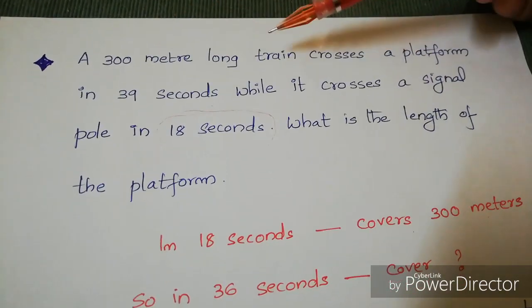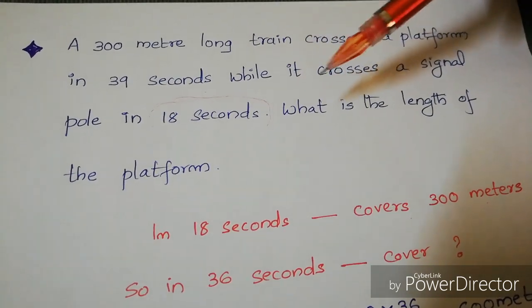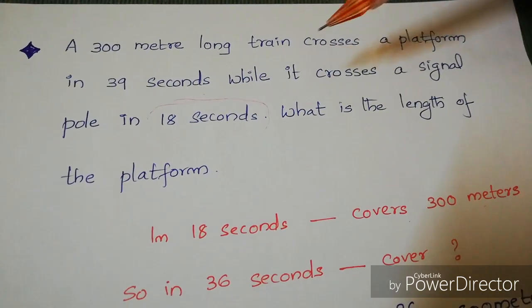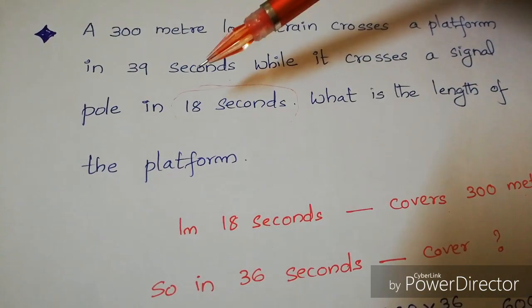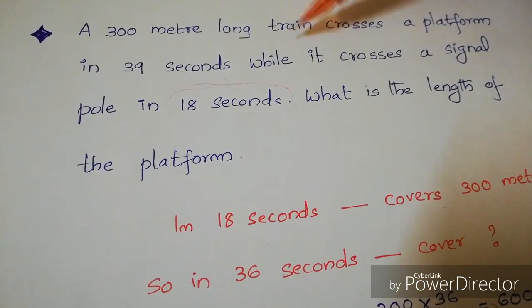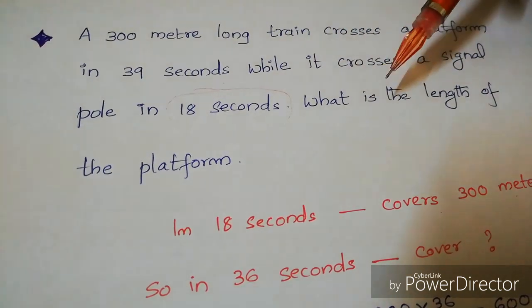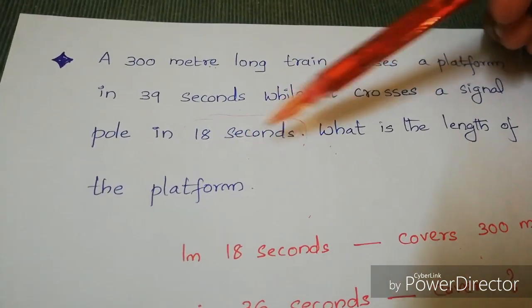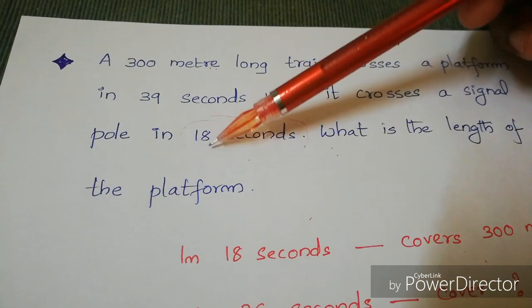Next question: a 300-meter long train crosses a platform in 39 seconds, while it crosses a signal pole in 18 seconds. What is the length of the platform? When crossing the platform in 39 seconds, it covers the combined length of train plus platform. From the pole crossing, we can find the speed.